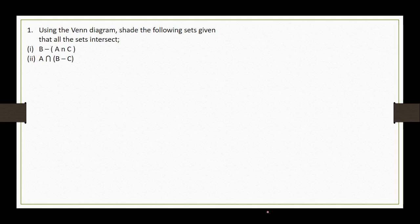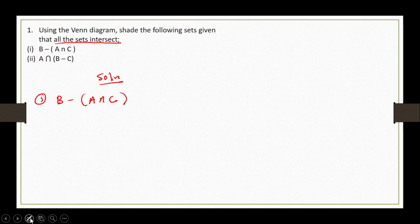Let's get started and look at the first question. The first question is: using the Venn diagram, shade the following sets given that all the sets intersect. The first expression is B minus (A intersection C). The key thing in this question is that we have been told that these sets are all intersecting.